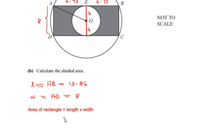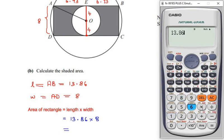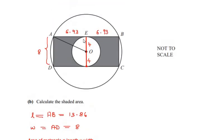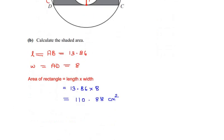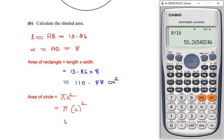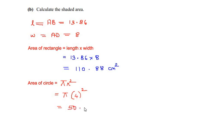Area of rectangle = length × width = 13.86 × 8 = 110.88 square centimeters. Area of circle = π r squared = π × 4 squared = π × 16 = 50.265, which we round to 50.27 square centimeters.